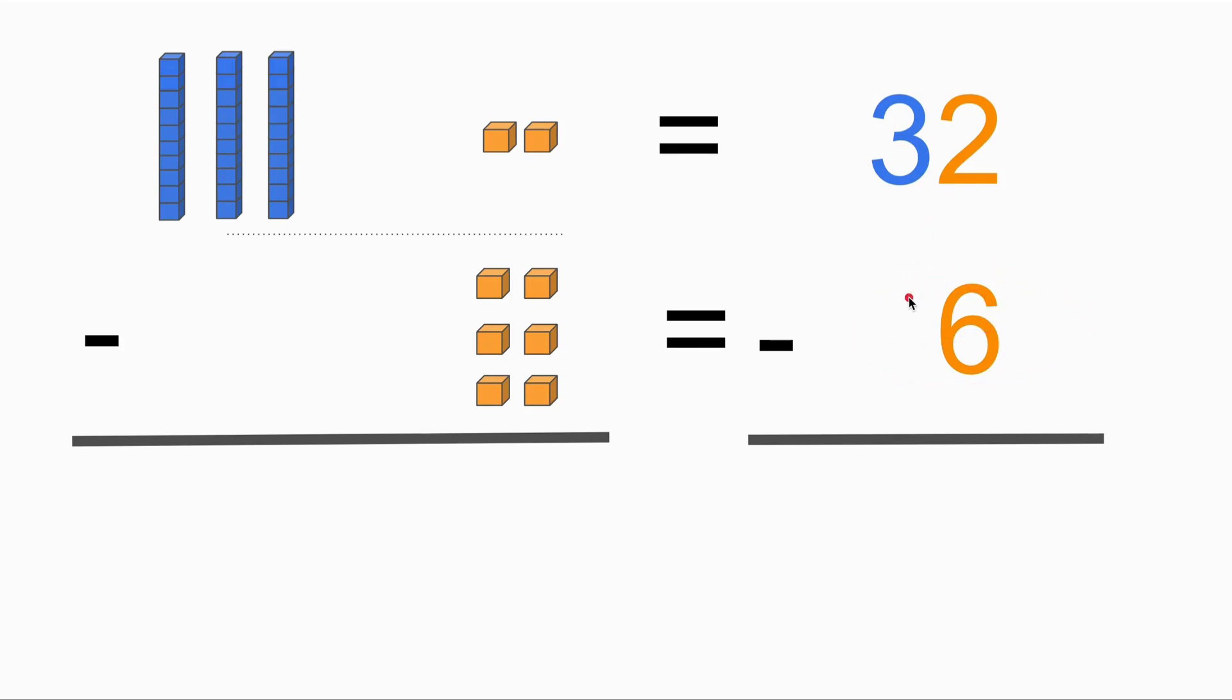Let's take a look at the illustration here. We've got three tens blocks in blue. So one, two, three. We got three tens blocks and we got two ones blocks marked in orange. And below we got six ones blocks, so it represents six. One, two, three, four, five, six.